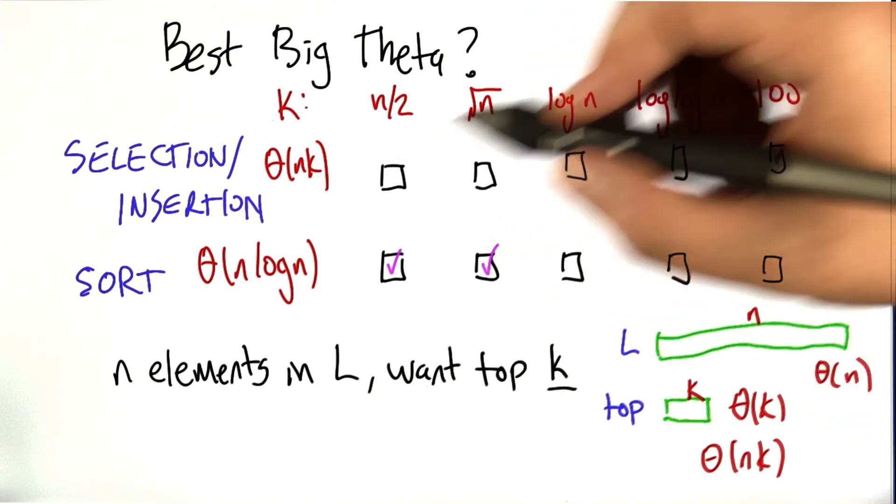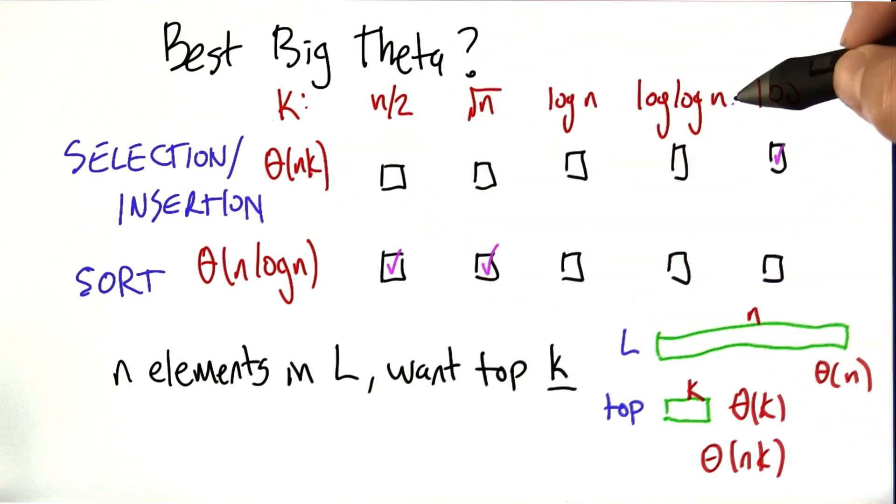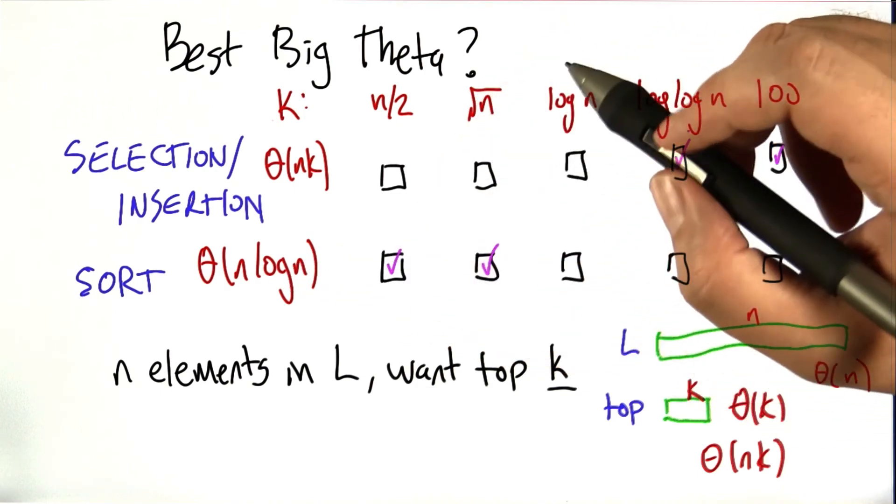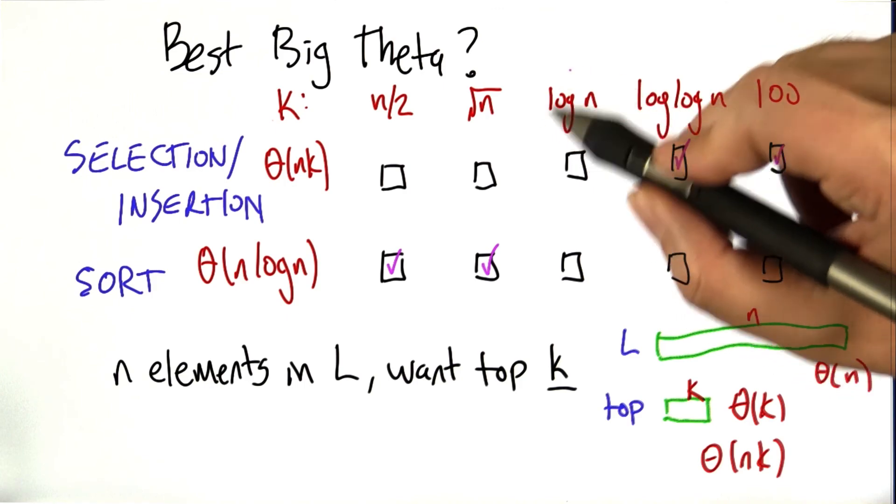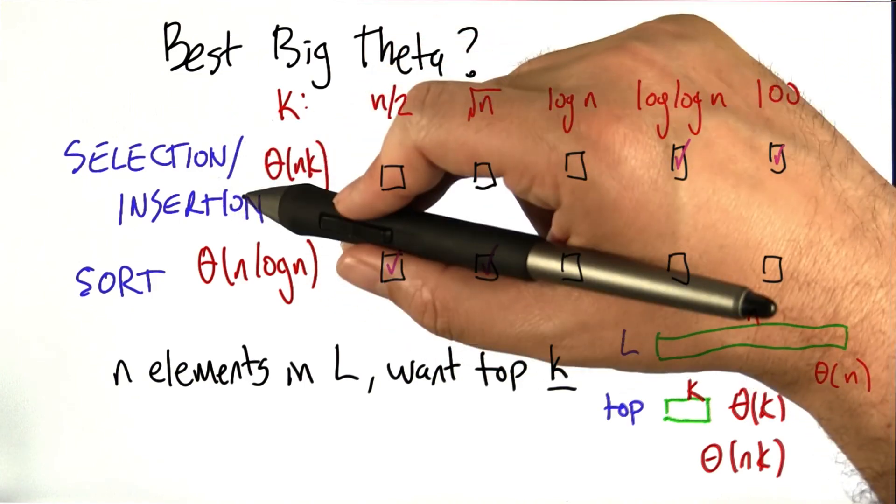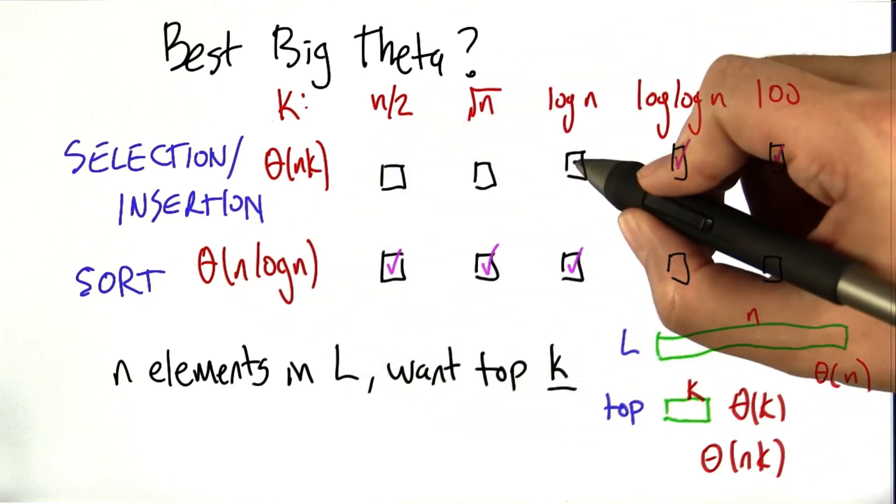Log log n is similar. We end up with n times log log n, which is better than n log n. And finally, if we substitute log n for k, we have n log n for selection and insertion, but we also have n log n for sorting, so these are actually the same.